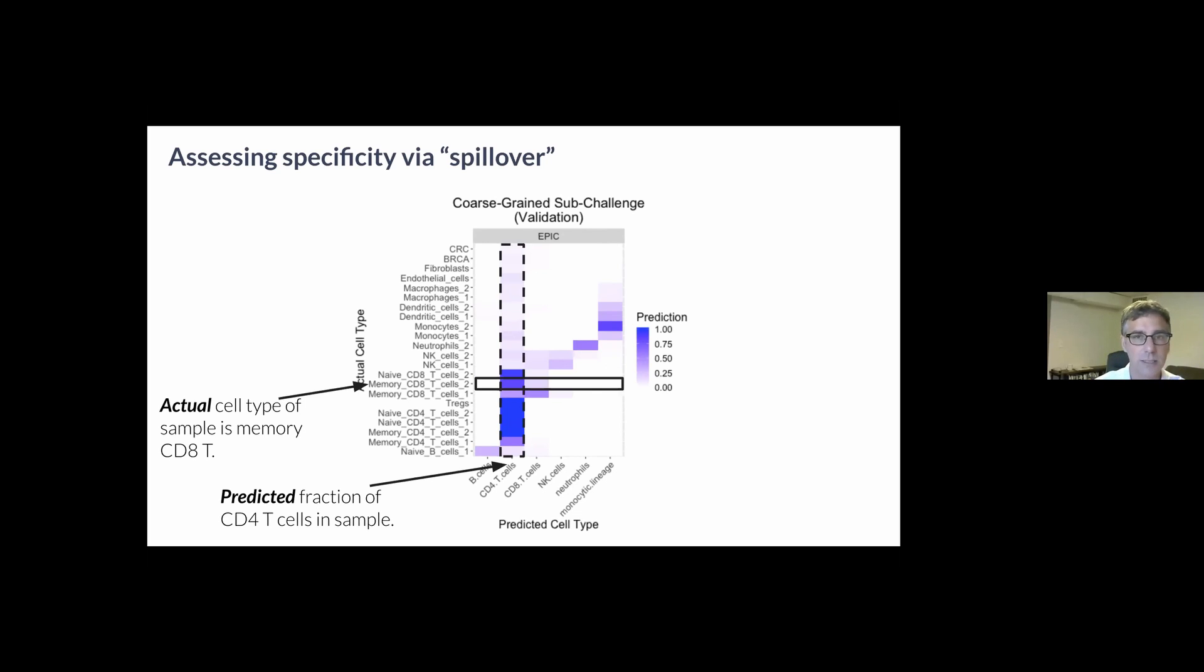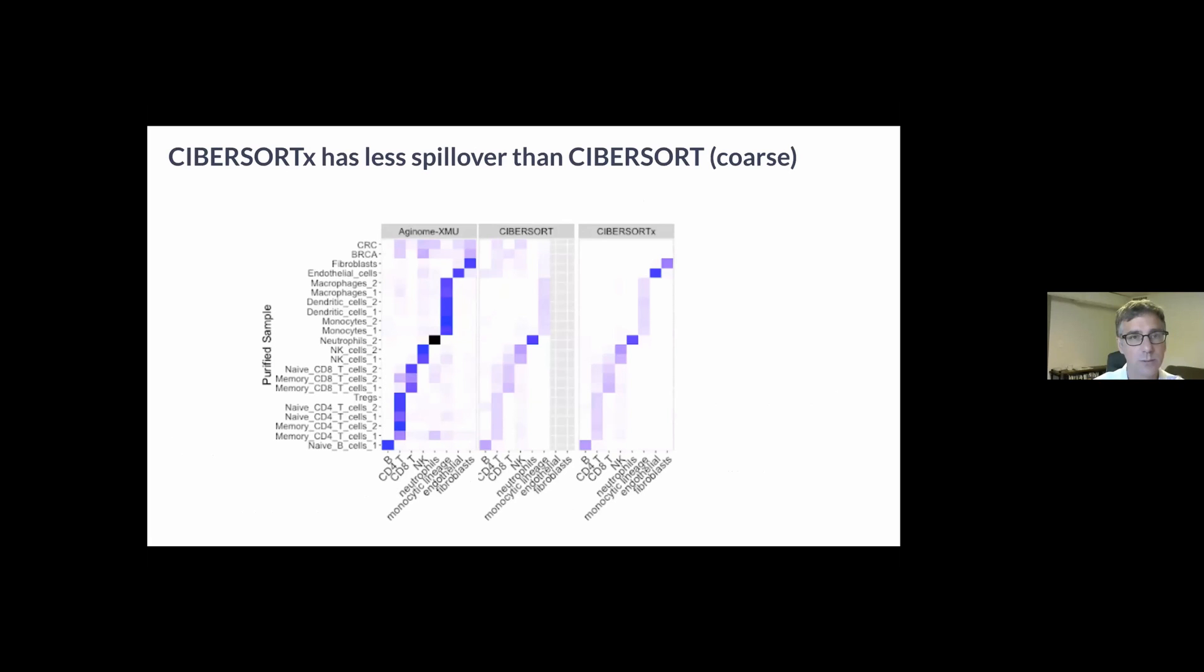I'm trying to show you that here schematically in this heat map where the rows are the purified samples. For example, here I'm highlighting a memory CD8 T-cell sample. The columns are the predicted cell type where here I've highlighted CD4 predictions. So the intersection of those two is giving us the CD4 T-cell prediction for a sample that contains only memory CD8 T-cells for a particular method called EPIC.